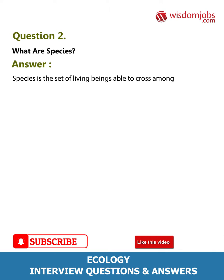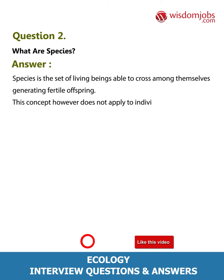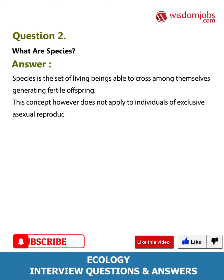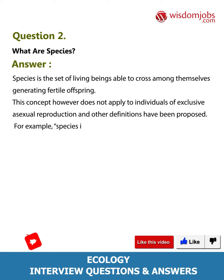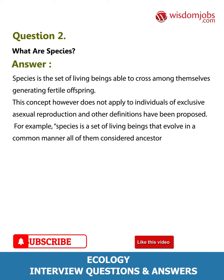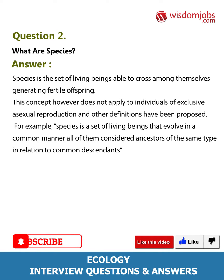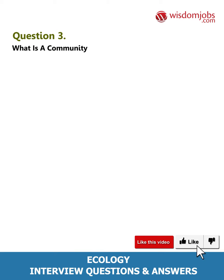Question 2: What are species? Species is the set of living beings able to cross among themselves generating fertile offspring. This concept, however, does not apply to individuals of exclusive asexual reproduction, and other definitions have been proposed. For example, species is a set of living beings that evolve in a common manner, all of them considered ancestors of the same type in relation to common descendants.